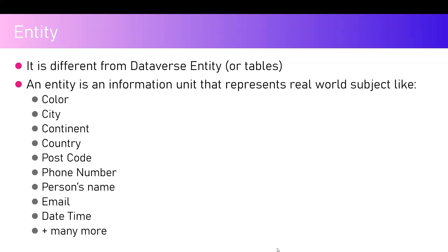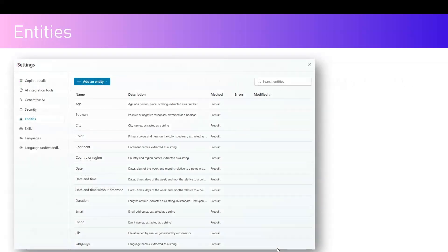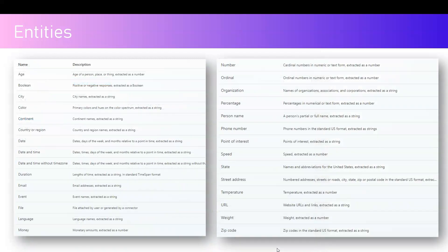There are almost 29 entities available out of the box — like country, continent, postcode, phone number, person name, email, date, time, and many more. Some concepts like postcode are United States-focused. If you want a postcode for Australia, India, or any other nation, you'll need to tweak the postcode entity or make use of a custom entity. The pre-built entities are visible on screen, including email, event, file, language, and others.